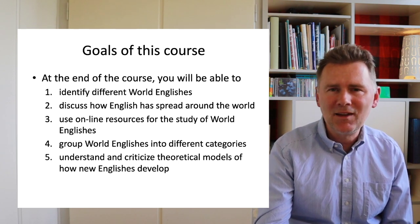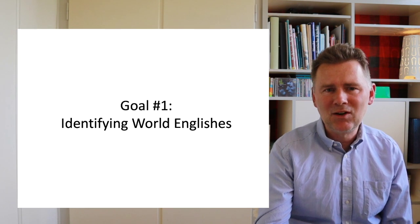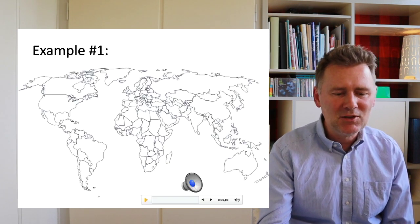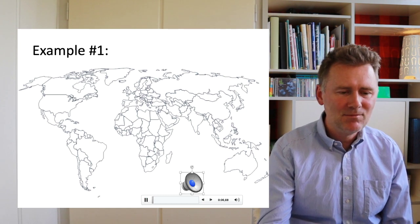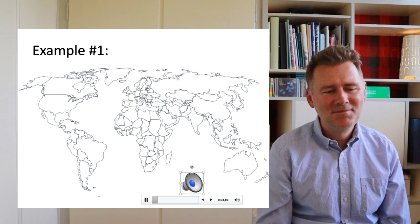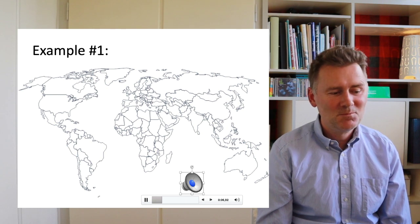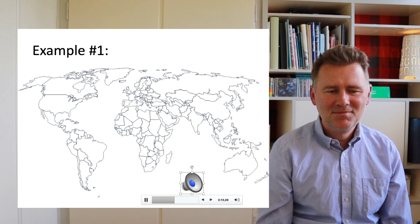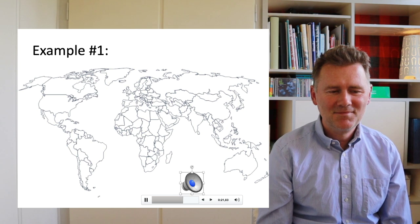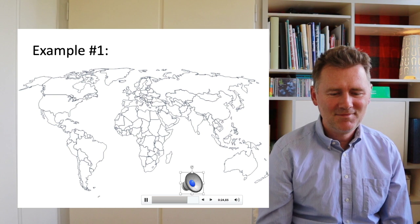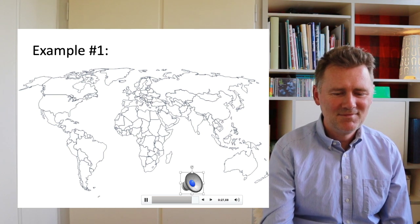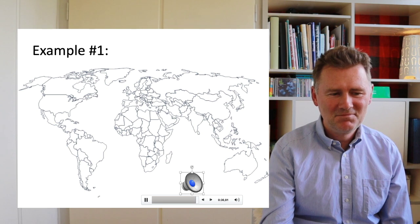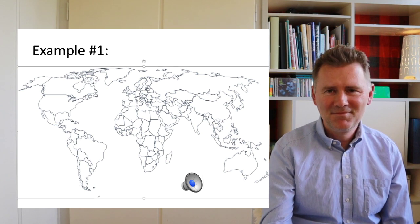Coming back to the goals of this course, let's start with goal number one: how to identify different world Englishes. Let's go through some examples and try to pinpoint where the speakers are coming from. Speaker number one: 'Now for this recipe you're gonna need a few things. You need a little bit of olive oil. We've got some molasses, dry mustard, and here I've cooked up some bacon. I've got some chopped onions, some jalapeños, some rub, a little bit of beer for both the recipe and the pit master, and here I've got two one-pound cans of regular baked beans.'